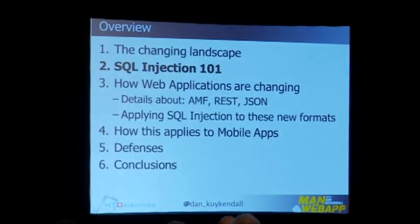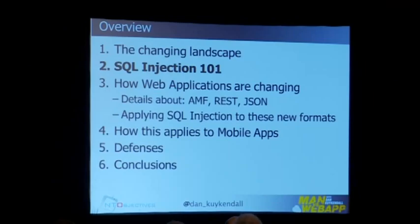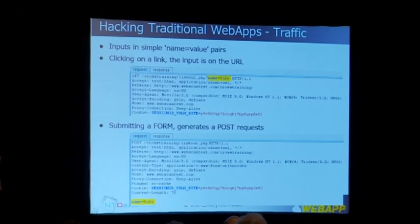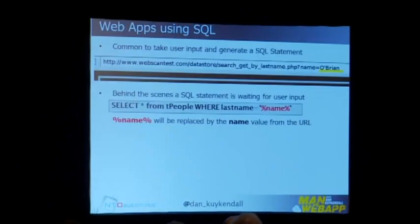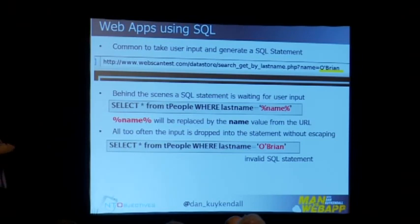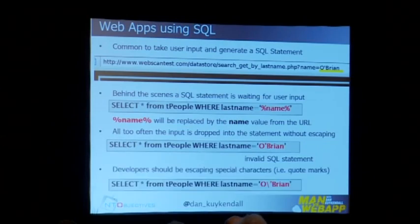Let's baseline everybody. I'm assuming most people know how SQL injection works, but I just want to baseline it and show how it works in the other formats as well. The basics of standard SQL injection: you've got your name-equal-value pair, that parameter is going to be used somewhere — either on the GET or the POST. Somewhere behind the scenes, if they're not using stored procedures, they're going to be taking and creating a SQL statement with the data. The name parameter is going to be replaced with the data coming in. If developers aren't doing the right escaping and data comes in with a single quote, you're going to create an invalid SQL statement. They should be escaping it, but we know they don't — that's why we all have jobs in this space.